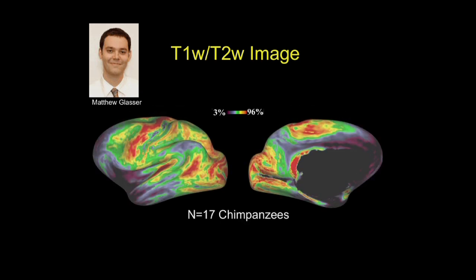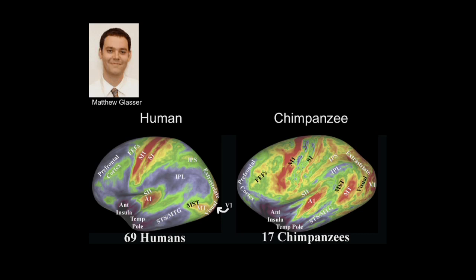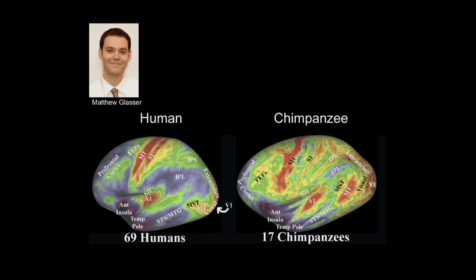Matt then did the same analysis in the chimpanzee cortex. The first obvious thing you notice is that there's a whole lot more color in the chimp cortex, implying a much greater proportion of primary cortical areas in the chimp brain, or a much smaller proportion of higher-order association cortices. If we put the human and chimp brain side by side — with the chimp brain enlarged to the size of the human brain and inflated slightly to show the sulci — you can see there's a lot more association cortex in humans.